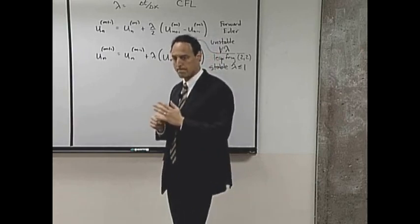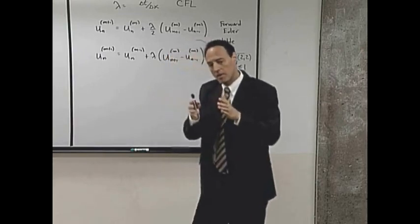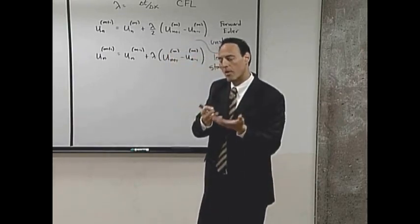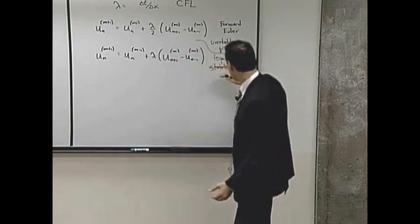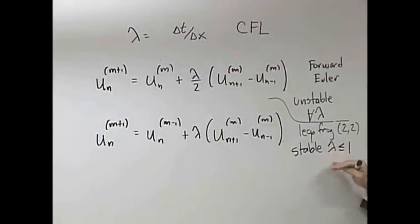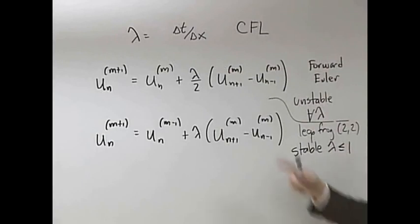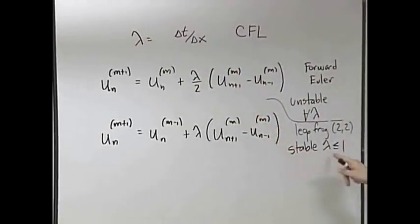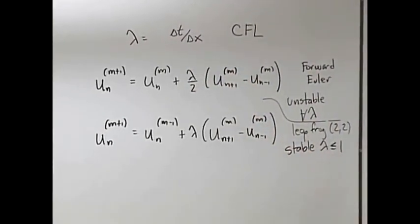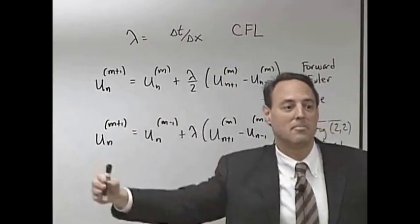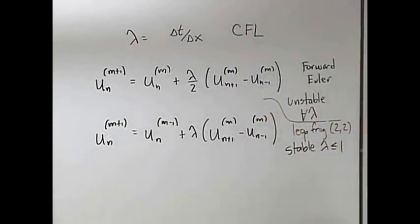So the CFL number now constrains you. Part of what you would like to do is make this as big as possible. You want to take delta t as big as you can without violating that, because the bigger you take delta t, the bigger the steps you march forward into the future. So the CFL plays the critical role here about stability of schemes.